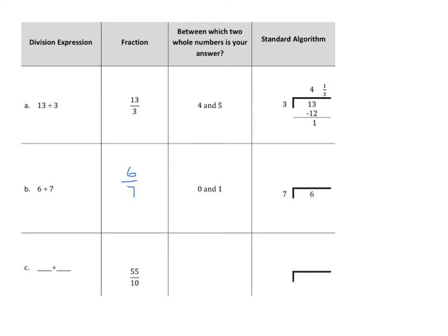Now we do the problem. 7 goes into 6 zero times, 7 times 0 is 0, 6 is our remainder, that's our numerator, and the divisor is our denominator.